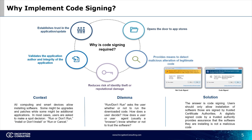"Run or don't run" asks the user whether or not to run the downloaded code. How does a user decide? How does a user or user agent know whether or not to trust the software? The answer is code signing.